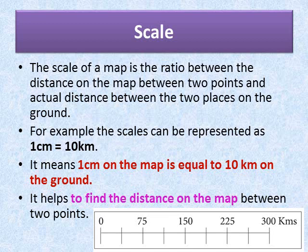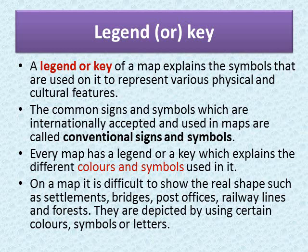The next important element is legend or key. The legend of a map explains the symbols that are used on it to represent various physical and cultural features. Some signs and symbols are used and accepted internationally — these are called conventional signs and symbols. Every map has a legend or key which explains the different colors and symbols used in it.